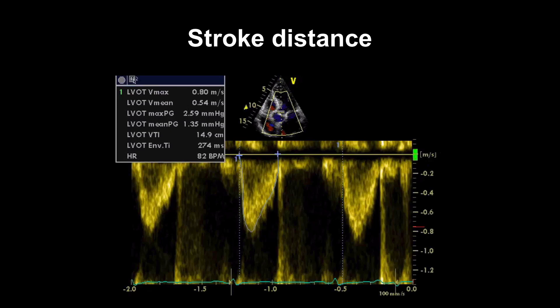Another way to describe LV systolic function is to view it in terms of how much blood is ejected, rather than using the change in the size of the left ventricle. And Doppler echo can be really useful for this. There are three commonly used measures: the stroke distance, the stroke volume, and the cardiac output. Let's start with stroke distance.